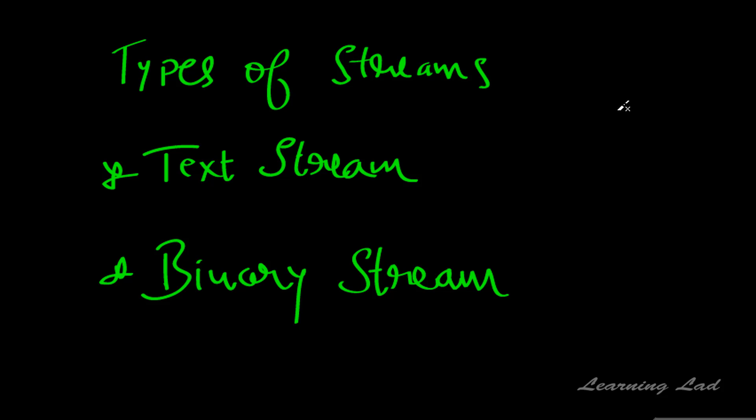A binary stream is nothing but a sequence of bytes that have a one-to-one correspondence to those on the external device. When we use a binary stream, the content we write and the content returned by the device are going to be the same. There will be no translation between new lines and carriage returns or anything like that. If you don't fully understand these types of streams — text streams and binary streams — this information is provided just for reference.